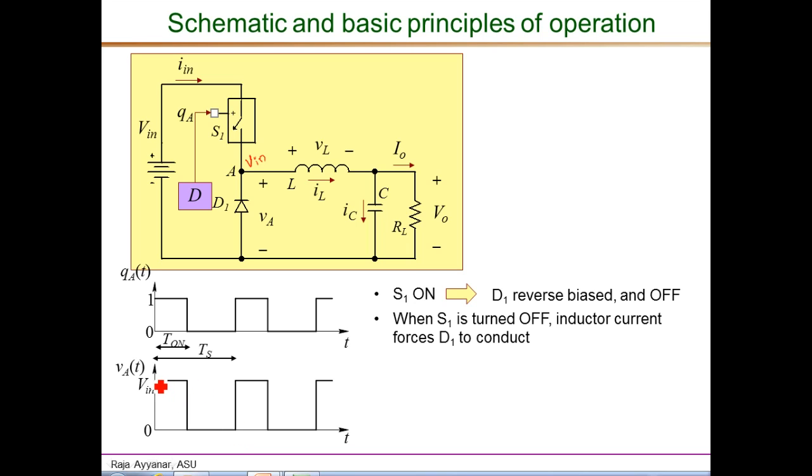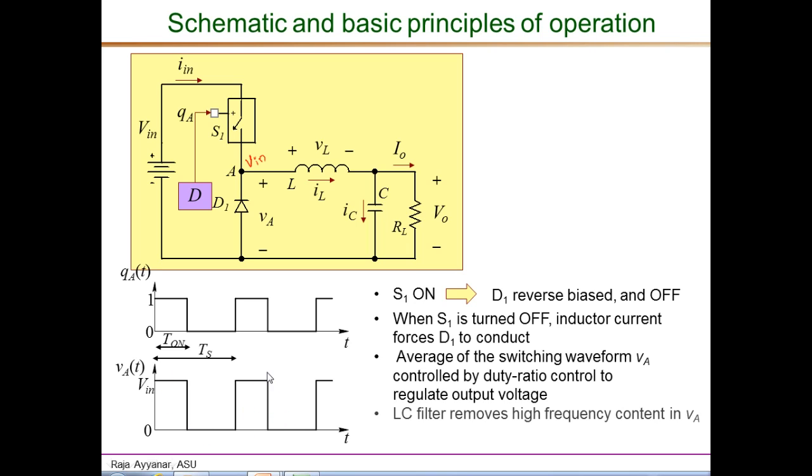So this is how the V_A waveform looks like. By changing this T_on duration or the pulse width, we can control the average of this voltage as indicated here. Clearly, this waveform has a large switching frequency component and that is removed by the LC filter to produce a smooth control output voltage.